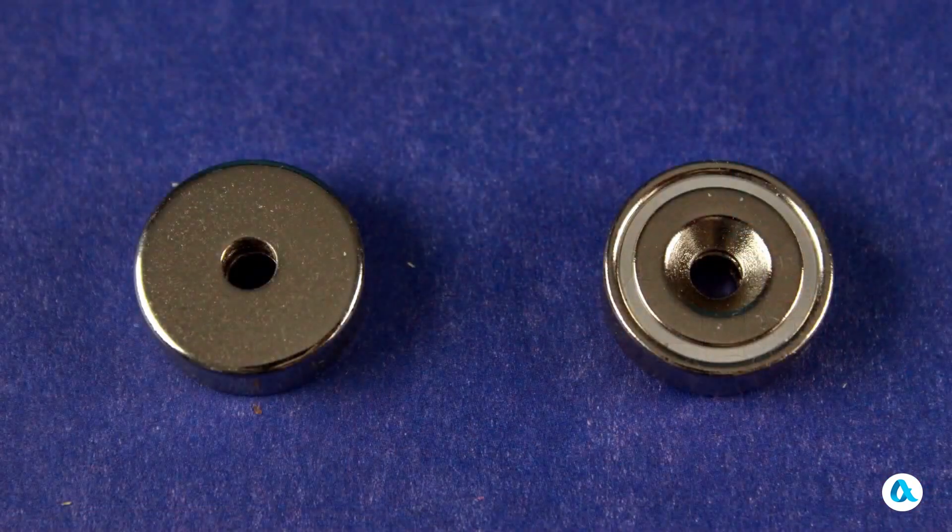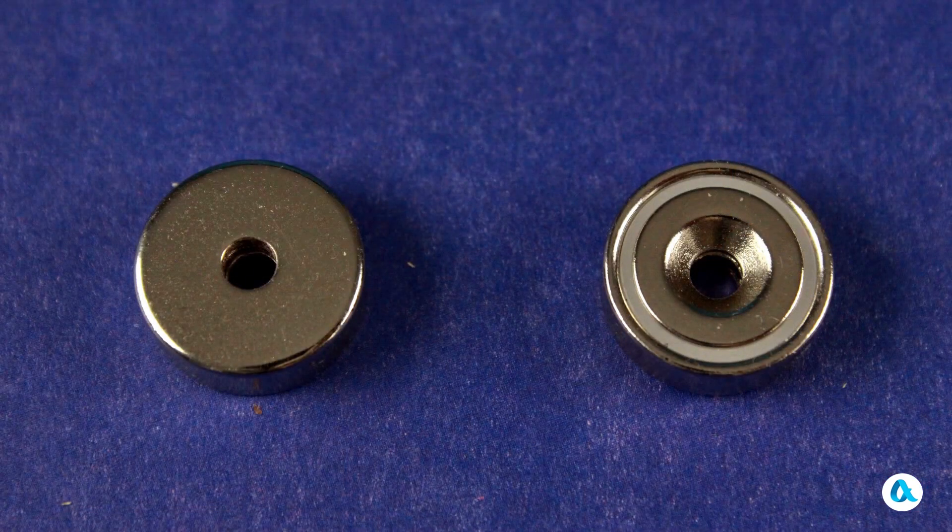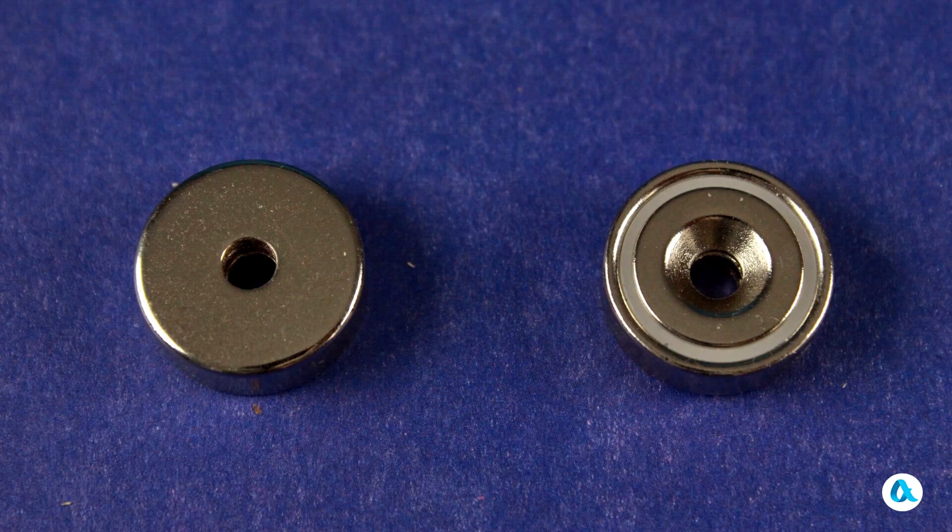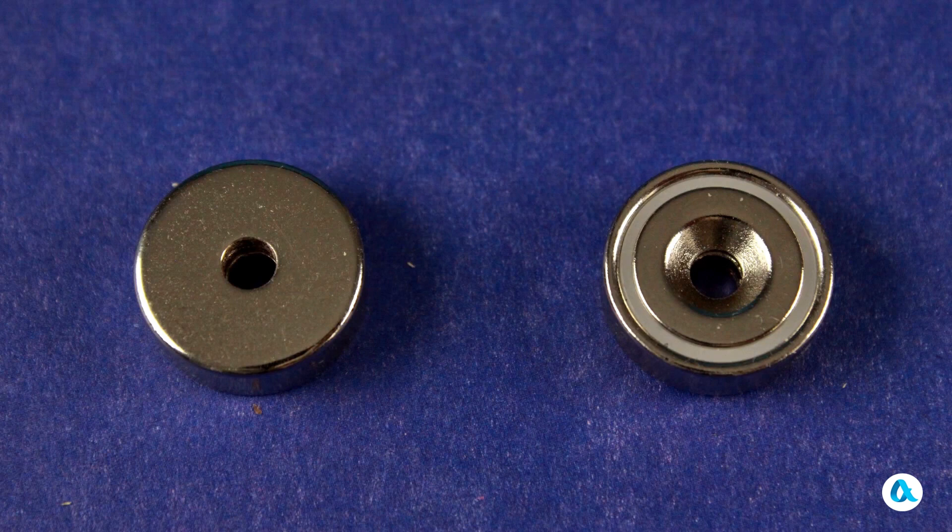Let's take a look at how such a magnet is structured. On the back side, we see a solid shell and, at the front, a central insert that is separated from this shell by a plastic spacer.